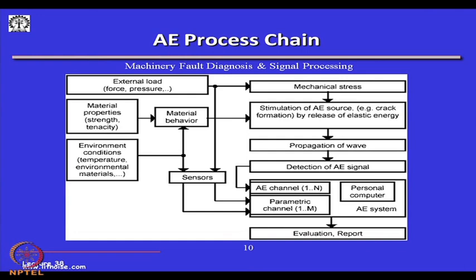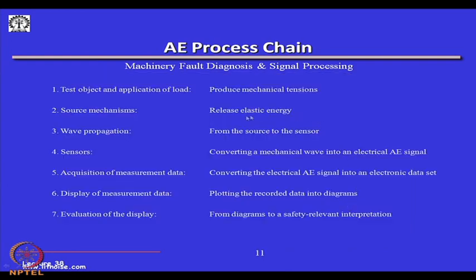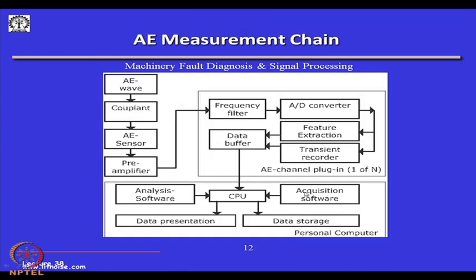Looking at the analog AE process chain: the machine or member is stressed, and because of this there will be a release of elastic energy. This wave propagates, then the acoustic emission signal is detected and recorded with a number of sensors, then put into a personal computer to analyze the signals. Sensors convert the mechanical wave into an electrical signal, and acquisition converts the AE signal into an electronic data set which can be displayed or stored.